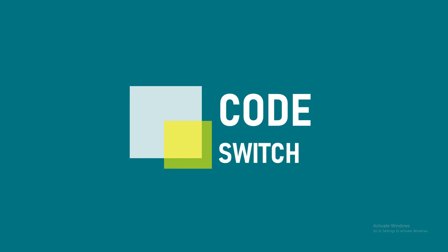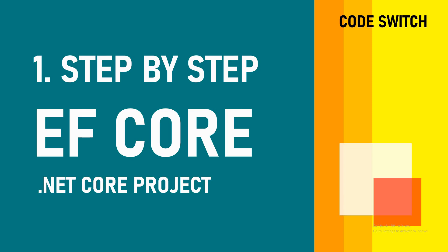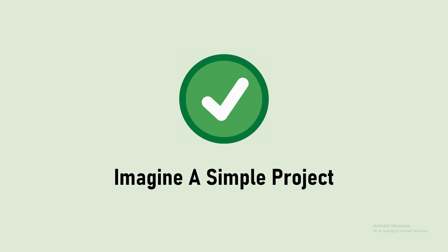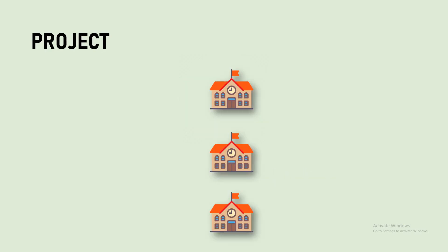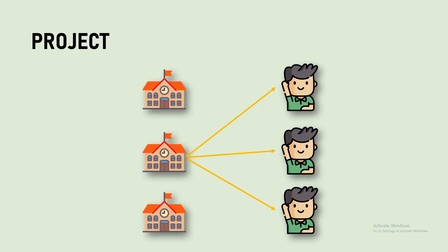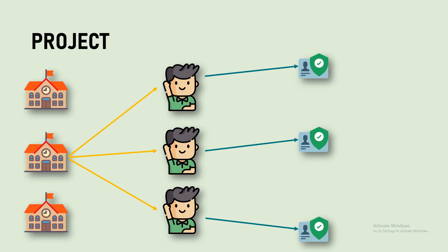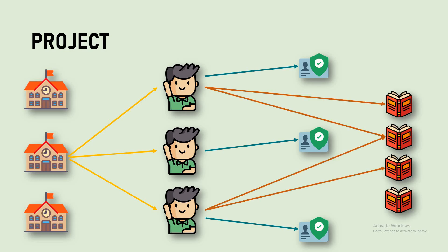Hi guys, welcome back to Code Switch. Let's imagine a simple project. In this project we have n number of schools, and if you take one school there are n number of students studying in that school. When these students join the school, the school gives them an ID card, so each student has an ID card. The school also provides subjects — each student can opt for two or more subjects, so we have n number of subjects.